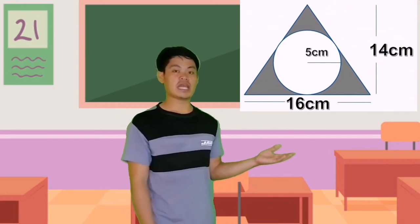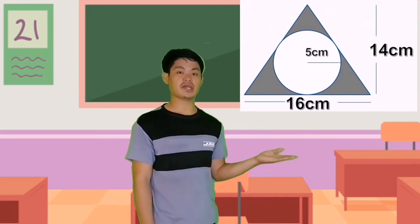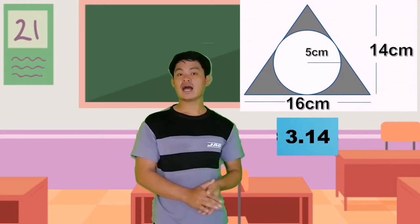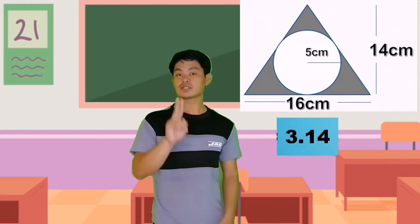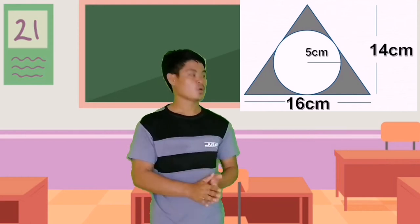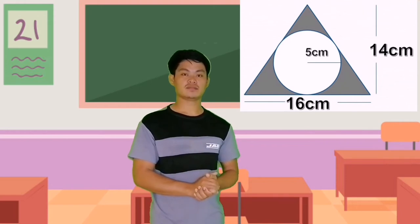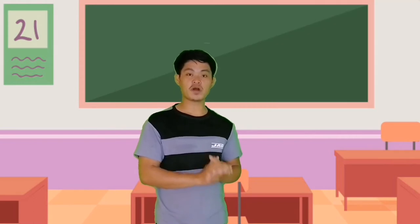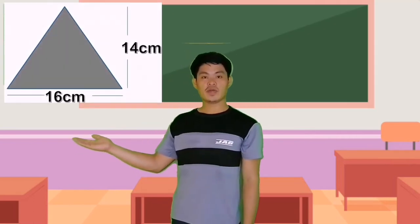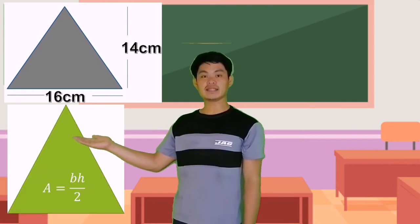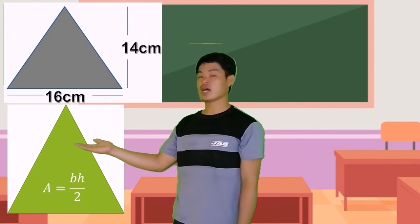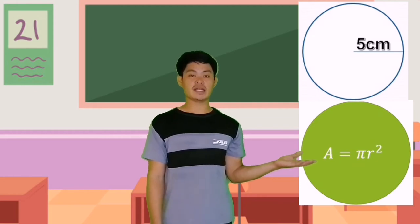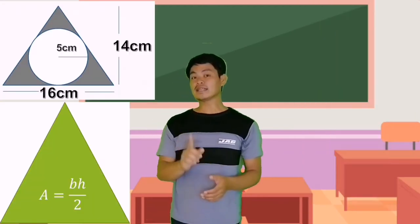Now let us have our second example. Find the area of the shaded region in this composite figure. Use 3.14 for the constant value of pi. In this figure, we have two shapes — a circle and a triangle. Let us separate these shapes with their corresponding formulas. Shape A is a triangle with area equals base times height divided by 2.